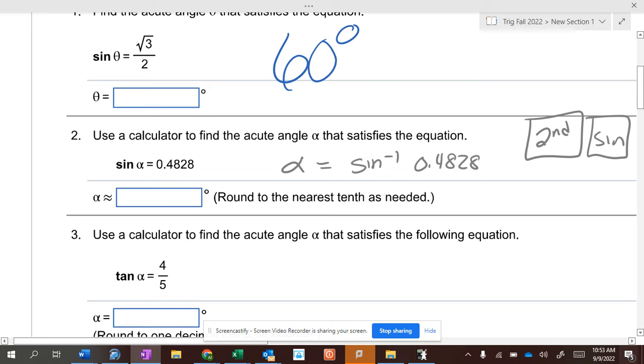So, what is the inverse sine of 0.4828? Make sure you're in degree mode, not radian mode. And what do you get? Do the nearest tenth, 28.9. 28.9.